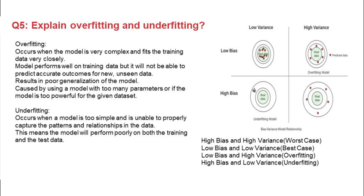Underfitting occurs when the model is too simple and unable to properly capture the patterns and relationships in the data, meaning the model will perform poorly on both training and test data. With respect to the four-quadrant graph: high bias and high variance is the worst case; low bias and low variance is the best case. Low bias and high variance leads to overfitting; high bias and low variance leads to underfitting.